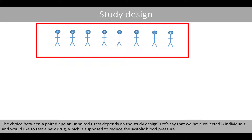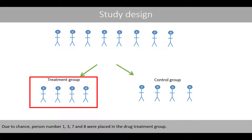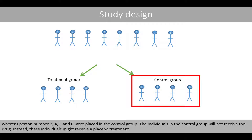Let's say that we have collected eight individuals and would like to test a new drug which is supposed to reduce the systolic blood pressure. To test if the drug has an effect, one could randomly assign the individuals into a treatment group and a control group. Due to chance, persons number one, three, seven, and eight were placed in the drug treatment group, whereas persons number two, four, five, and six were placed in the control group.